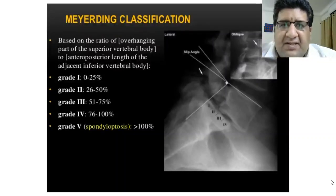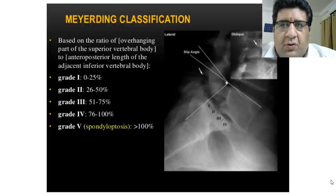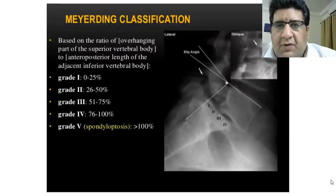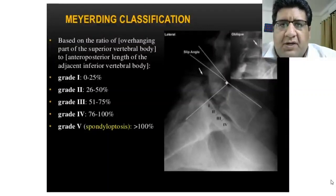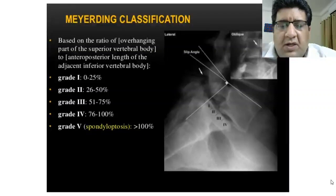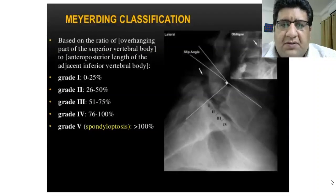To summarize Meyerding's staging: you calculate a ratio of the overhanging portion of the superior vertebral body. You take the inferior vertebral body's antero-posterior length, divide it into four quadrants assigning 25% to each, then determine which quadrant the posterior-most part of the superior vertebral body falls into. According to that, you grade the spondylolisthesis and make your clinical decision.